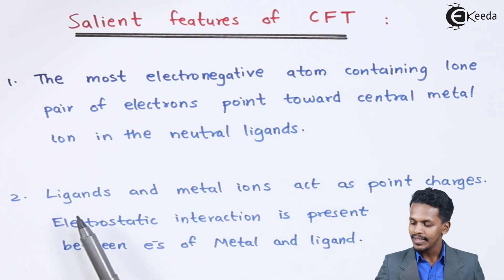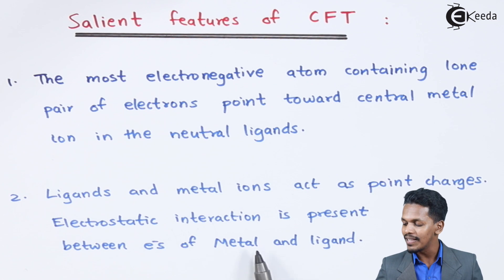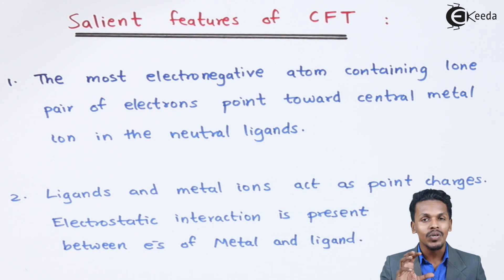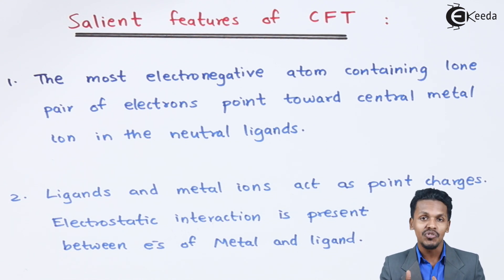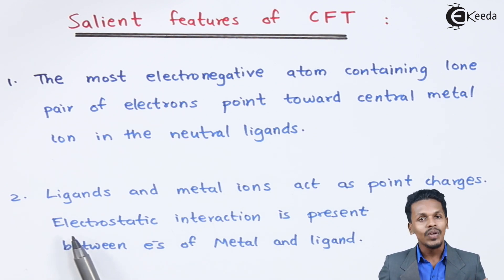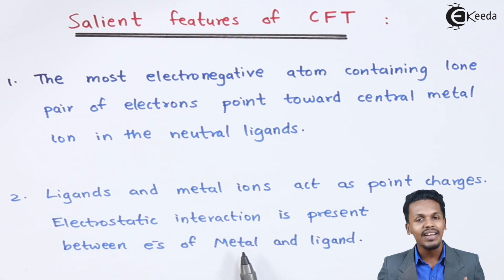The second point is that ligands and metal ions act as point charges, and therefore electrostatic interaction is present between the electrons of metals and ligands. Ligands donate their lone pair of electrons towards the central metal atom, so there is an opposite charge — one positive and one negative — creating an electrostatic force of attraction between the metal and the ligands.